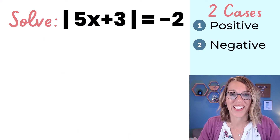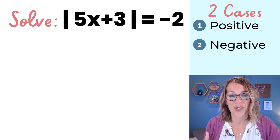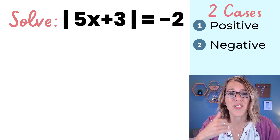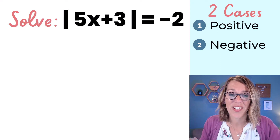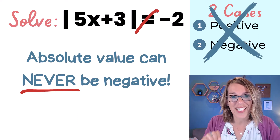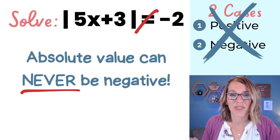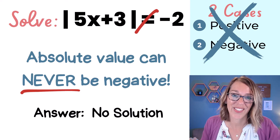This next one is one of our special cases. I've got an absolute value equal to negative 2. Since absolute value can never equal a negative number, this one is super easy — the answer is no solution.